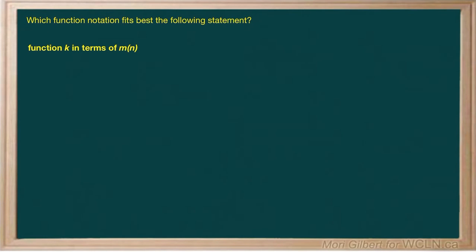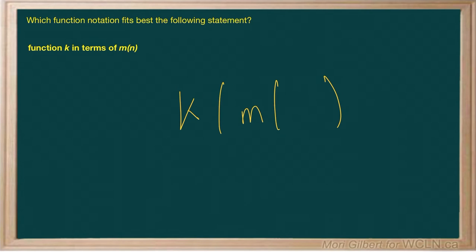Which function notation fits best the following statement: function k in terms of n times m? Function k is the letter to describe, and we set it up like this. Now, 'in terms of' means what goes inside the bracket, so m goes inside the bracket and close bracket. So this is our answer.